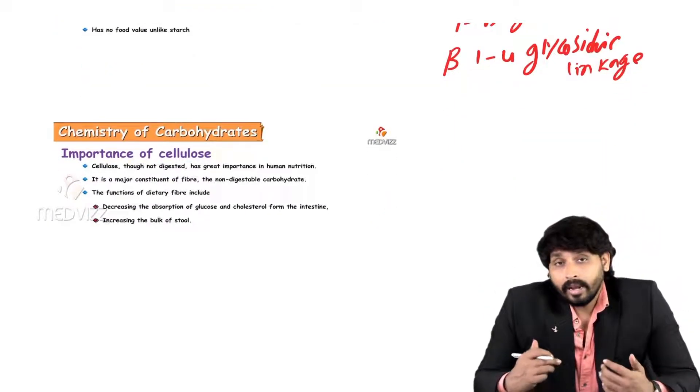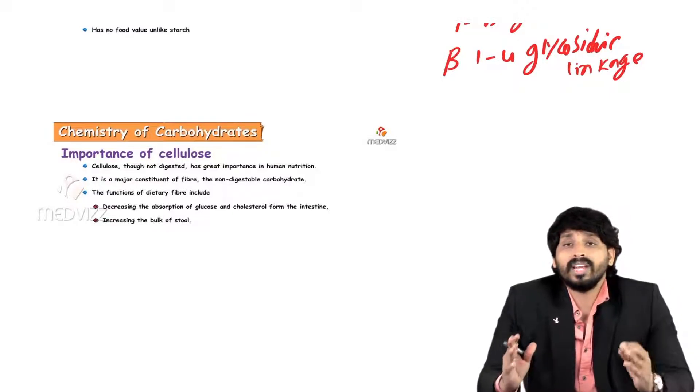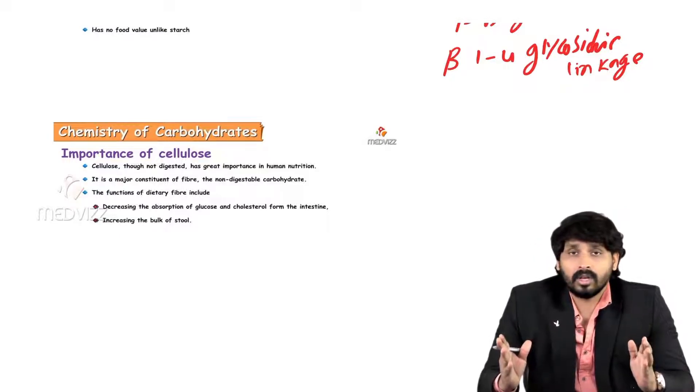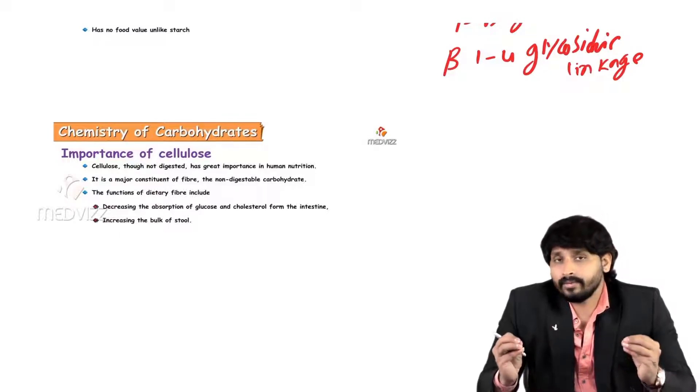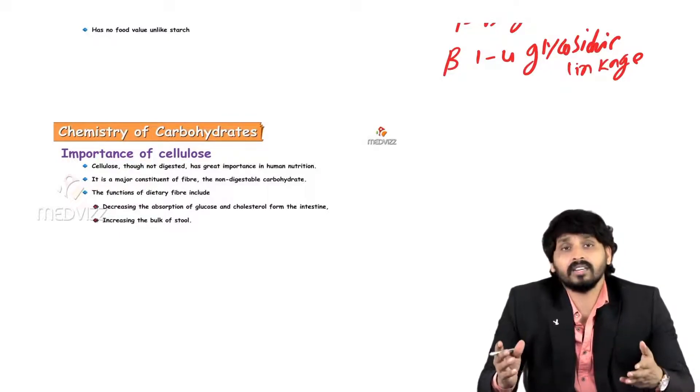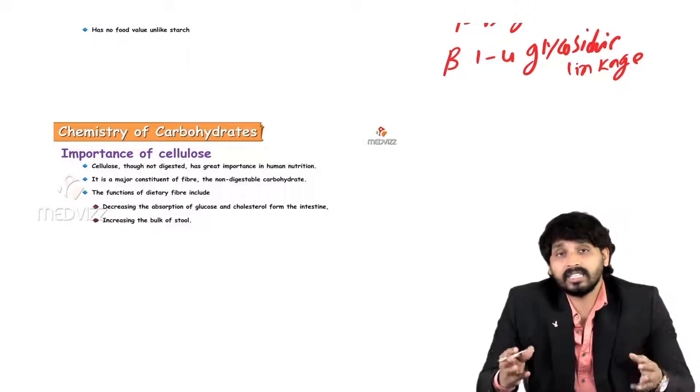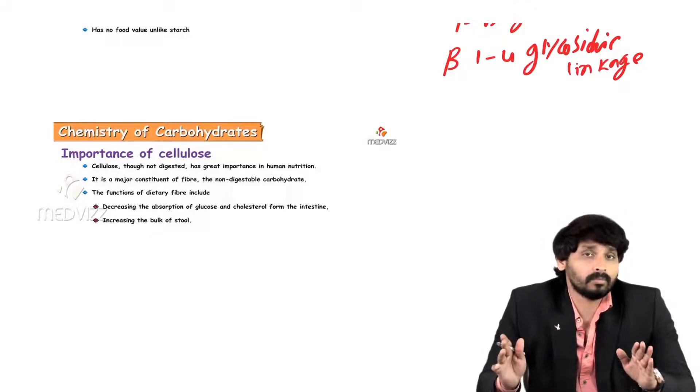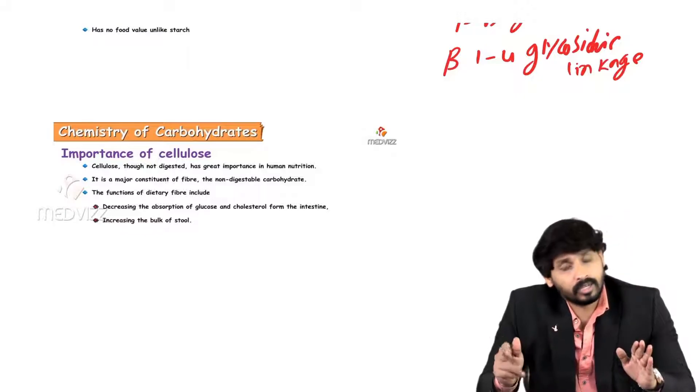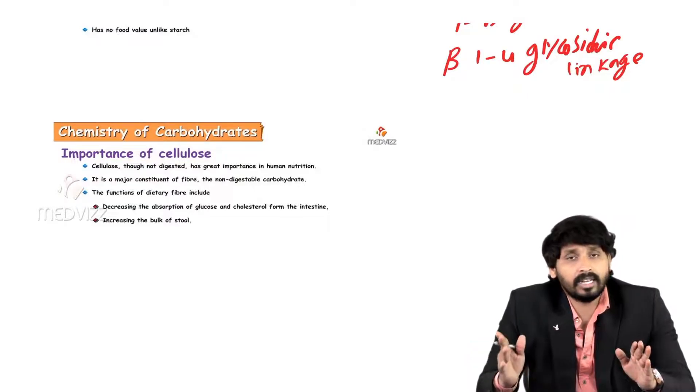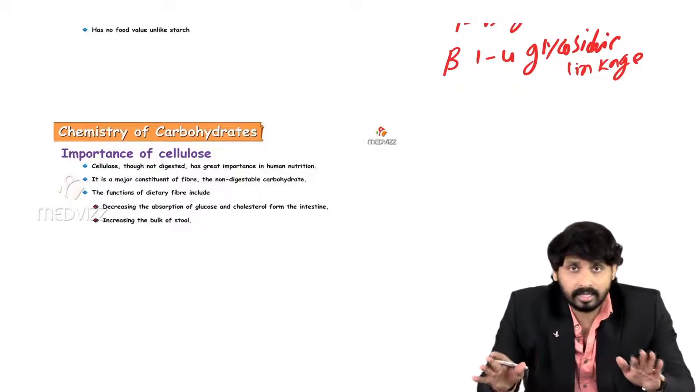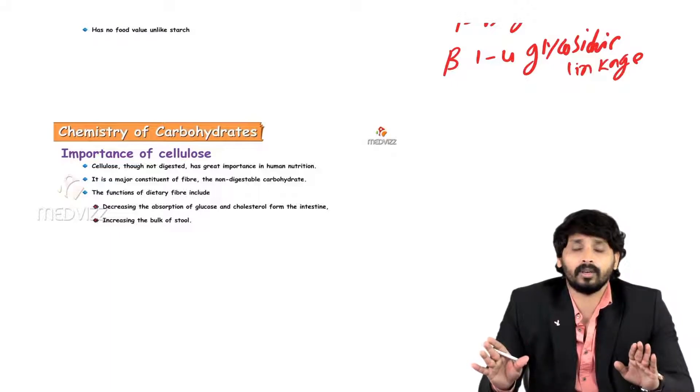Why we cannot digest cellulose? Because we humans lack an enzyme called cellulase. I mentioned in previous videos on properties of monosaccharides, we humans can utilize only D form of glucose. But cellulose is made up of beta-D glucose. Amylase is also alpha-informed. Alpha-D glucose has to be digested by alpha amylase. Since we don't have any cellulase enzyme which acts on beta-1,4 glycosidic linkage, we cannot digest cellulose. It cannot be absorbed.